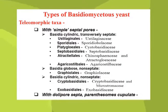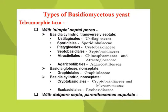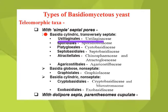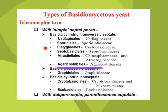In this schematic outline, within the group where septa have simple pores, three subgroups are recognized based on basidial structure. In one group, basidia are cylindric and transversely septate, which includes orders such as Auriculariales, Ustilaginales, Sporidiales, Platygloeales, Septobasidiales, Atractiellales, and Agaricostilbales.